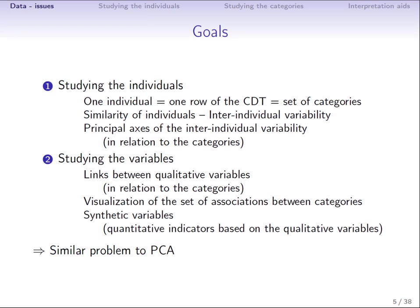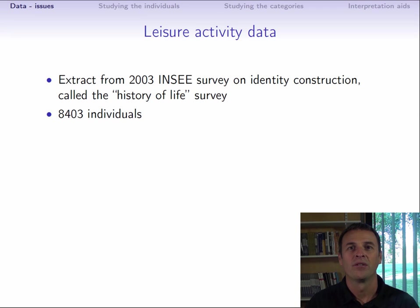We are going to illustrate multiple correspondence analysis using the results of a survey taken in 2003 on 8,403 people aged 18 and over. The INSEE Institute ran a survey on how people construct their identity, which they call the History of Life survey. Part of the survey looked into the leisure pursuits of the French. The dataset consists of 8,403 rows and 22 columns. The variables can be divided into two categories.